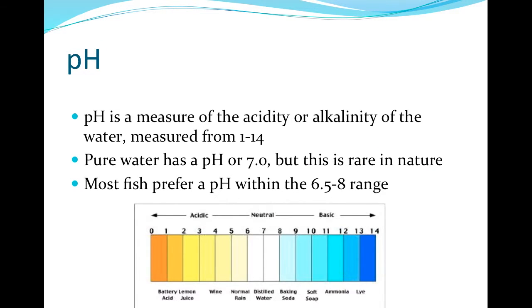pH is a measure of water acidity or alkalinity using the concentration of hydrogen ions. The preferred range of pH for a healthy aquatic system is 6.5 to 8. Some organisms can survive in a pH as low as 4.5 and as high as 10. The two most common causes of increased acidity in the eastern United States are acid mine drainage and acid rain.